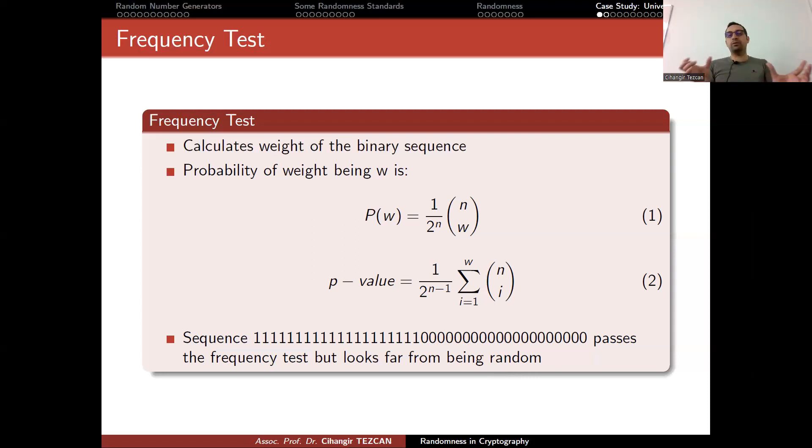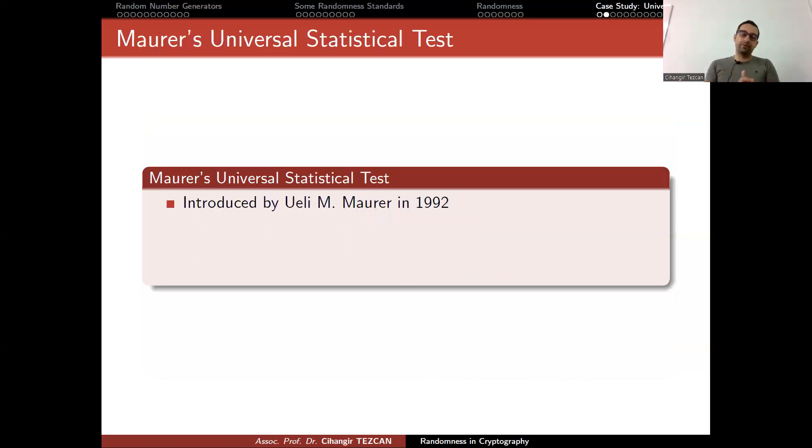This is why you cannot simply just use Golland's postulist and say that it is random or not. You have to check other properties to eliminate this kind of sequences, saying that this is not random. This is why we need different tests.